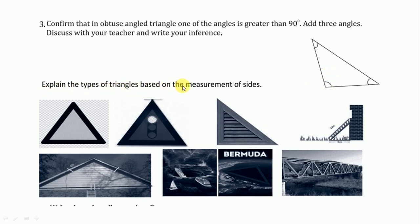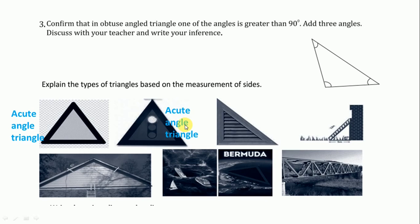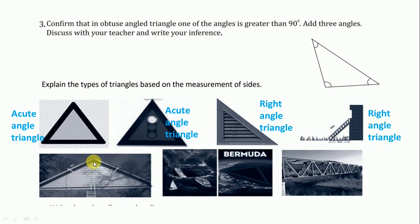Here we explain the type of triangle based on the measurement of sides. Earlier we discussed triangles based on angles. The first triangle has all angles less than 90 degrees, so we write acute angle triangle. Here also all angles are less than 90 degrees, so we write acute angle triangle. Here it is 90 degrees, so we write right angle triangle. Here also it is 90 degrees, so we write right angle triangle. And here it is more than 90 degrees, so we write obtuse angle triangle.